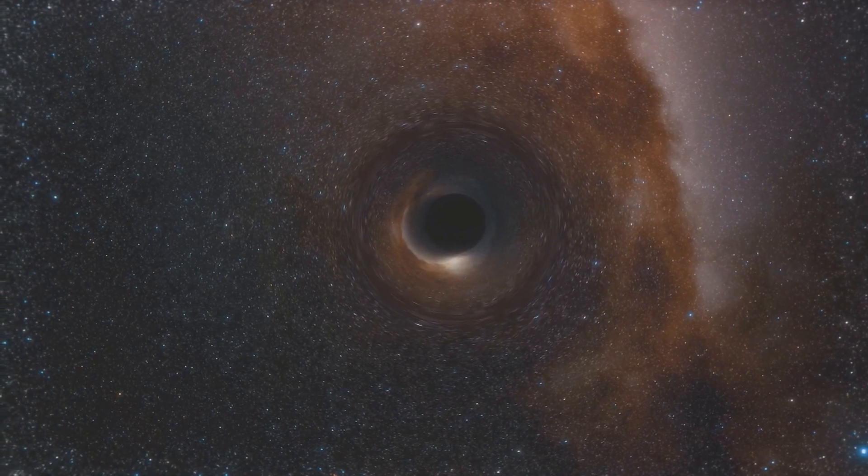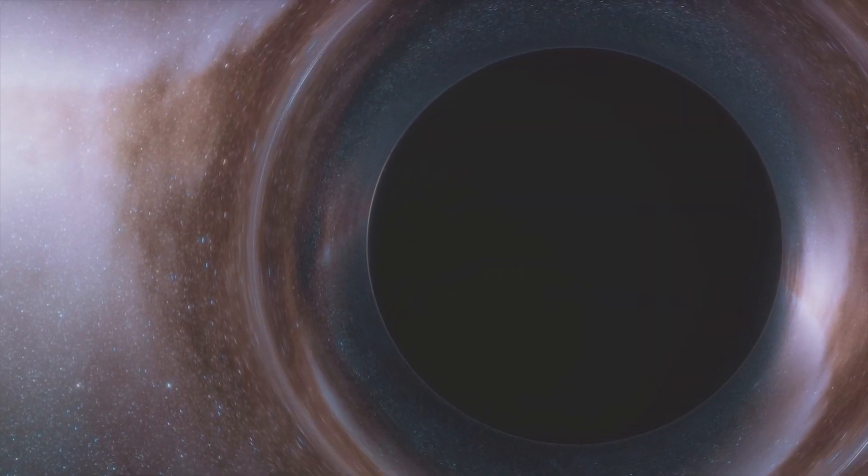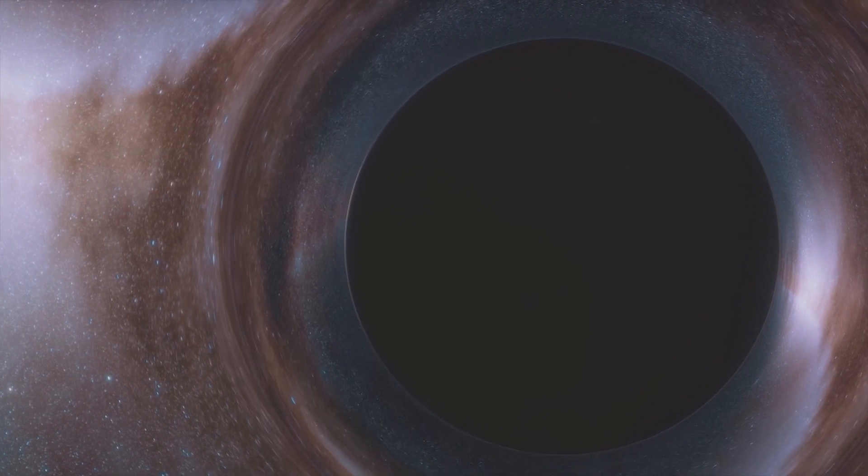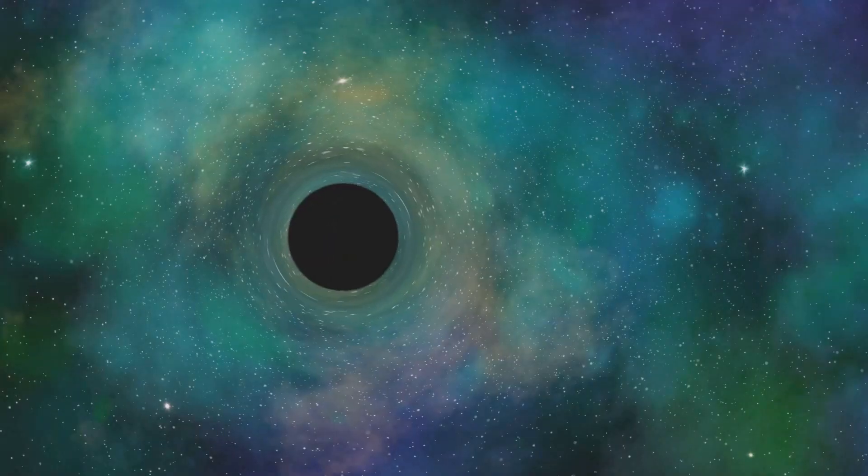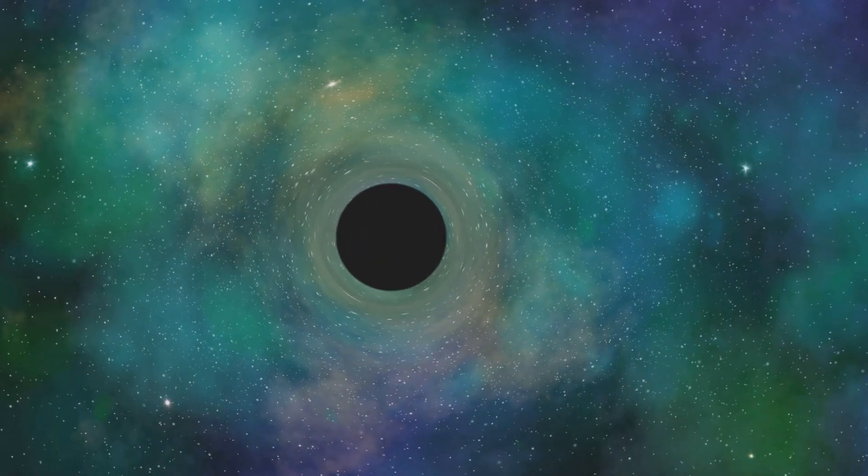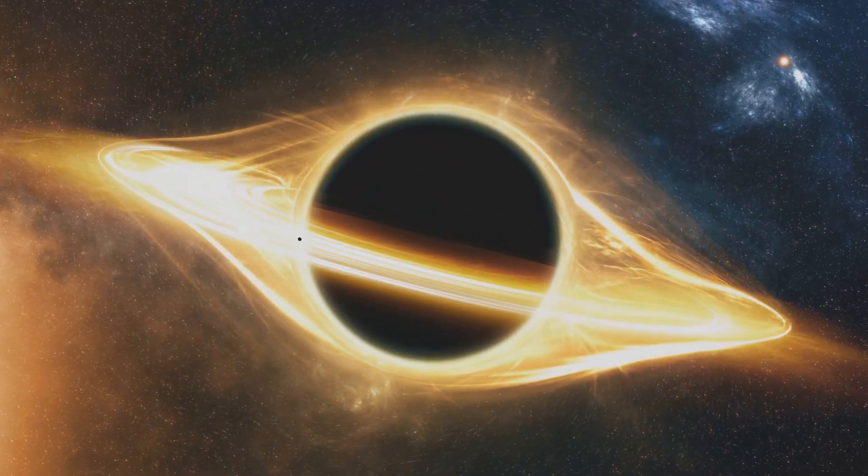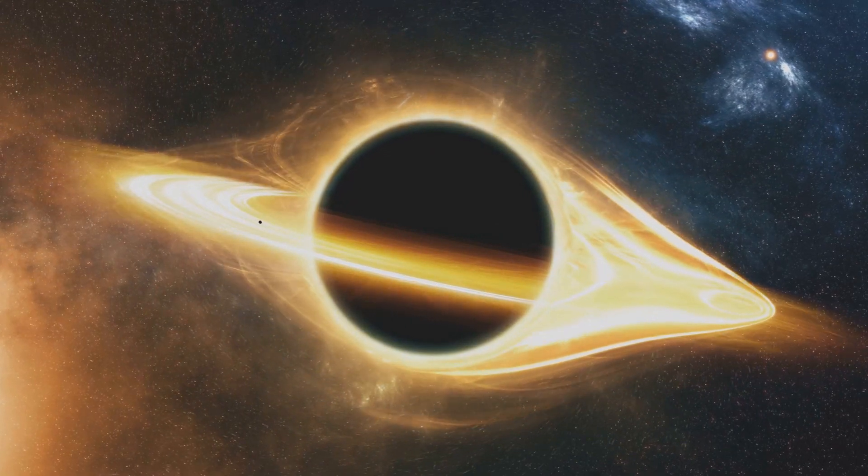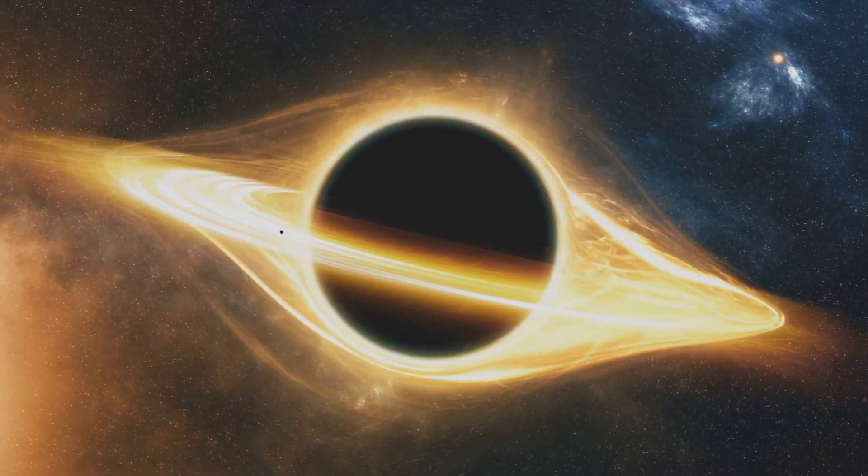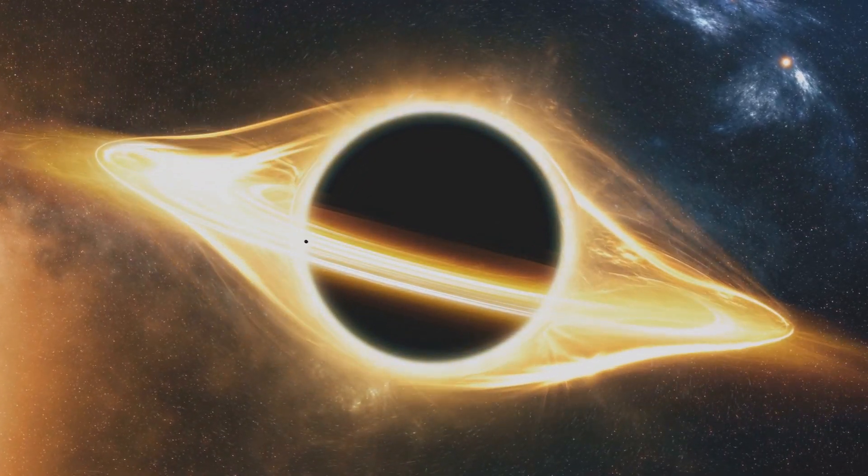Now picture this. A rogue black hole, wandering aimlessly through space, comes across our solar system. The immense gravitational pull of the black hole would start to distort the orbits of the planets, including our Earth. This could lead to catastrophic climate changes, or even fling us out of the solar system entirely.